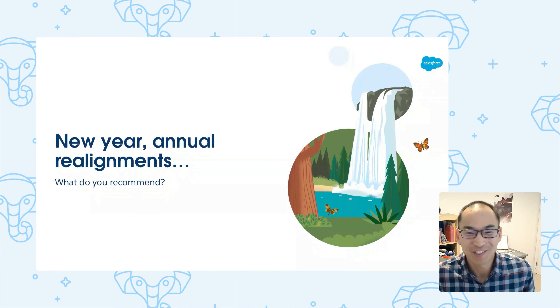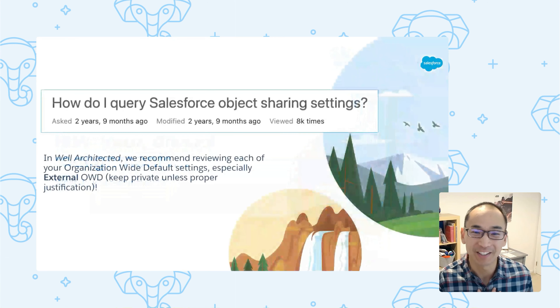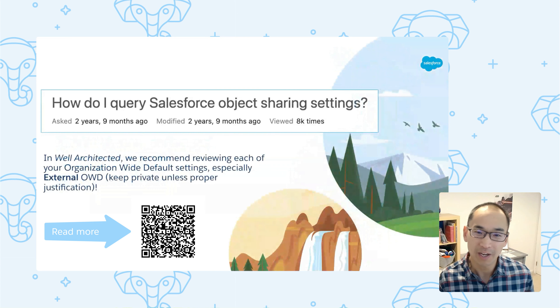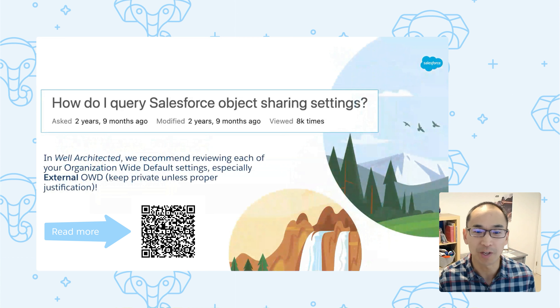I was actually thinking about this question from a customer. I was reading Well-Architected, and one of the things with Well-Architected is we strongly encourage you to go through and ensure security is set up on your objects for record access. Specifically, I got a question from a customer and they said, how do I just extract all the organization-wide defaults, both the internal and especially for external, and ideally be able to document why? We recommend you justify — you have a reason why something is private, especially if it's external.